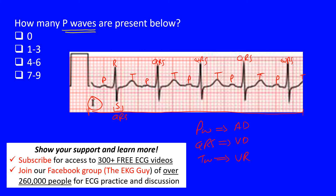The question is asking about P waves, so let's identify them here. We have one, two, three, four, five. So the answer is five. That puts us in between four and six, which is the third answer choice — five P waves.